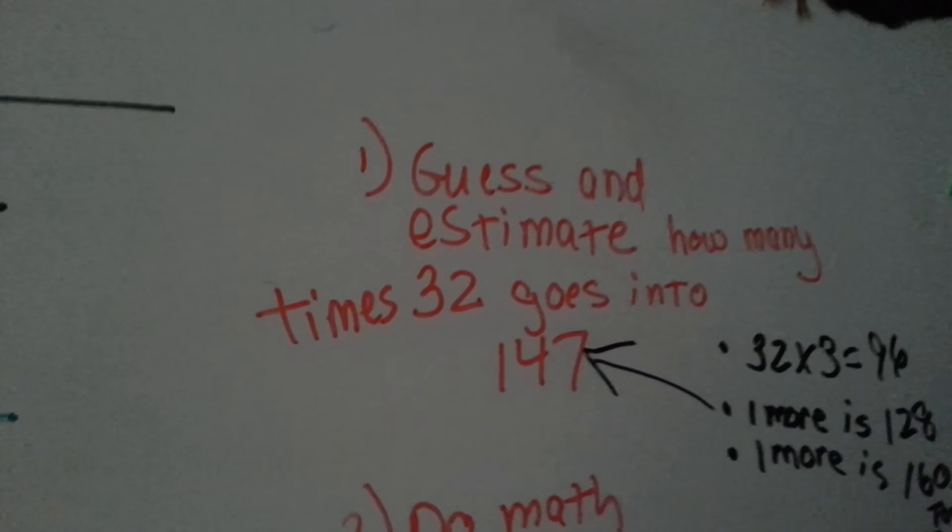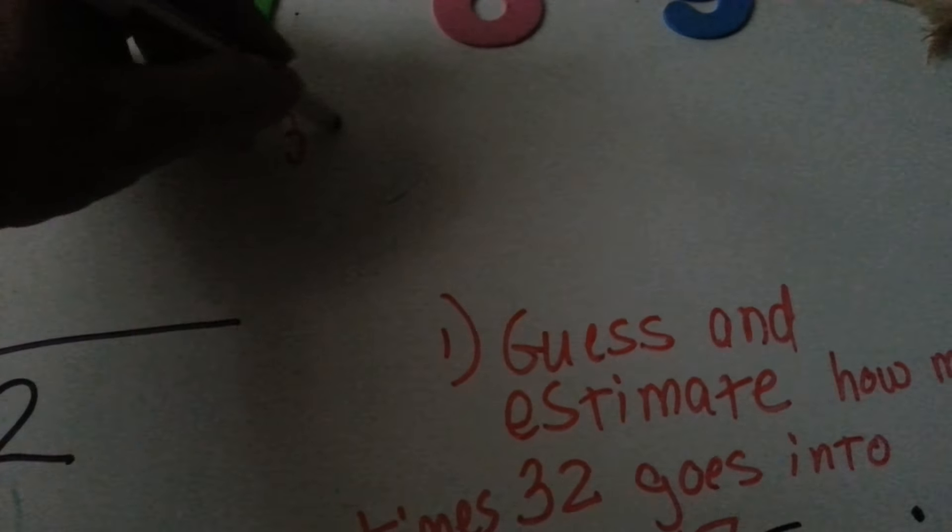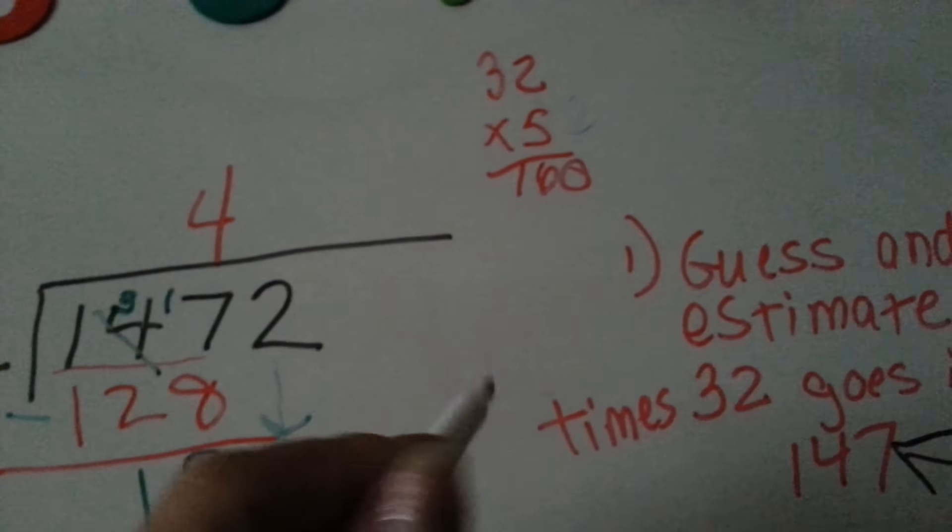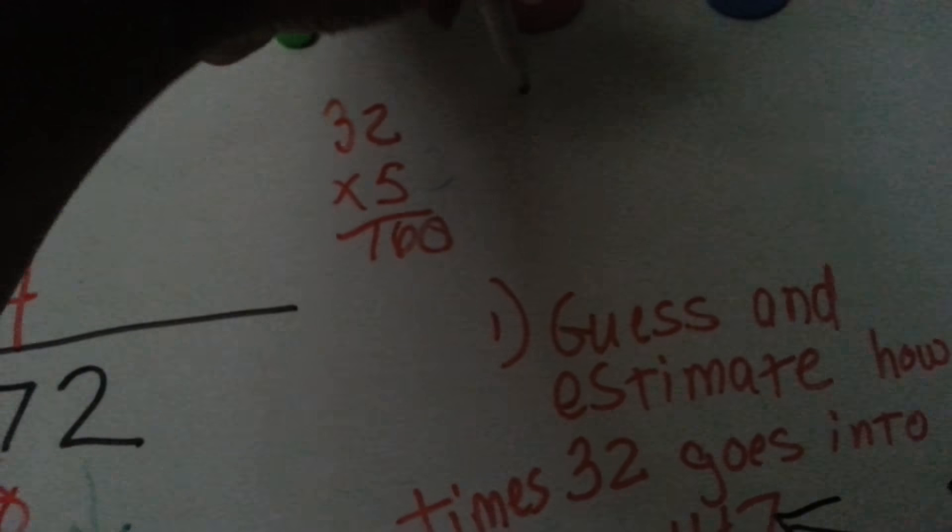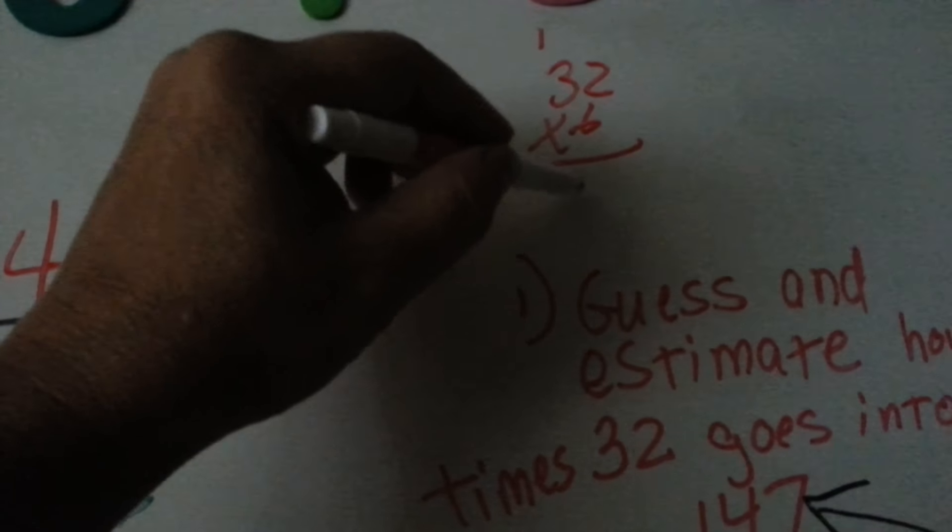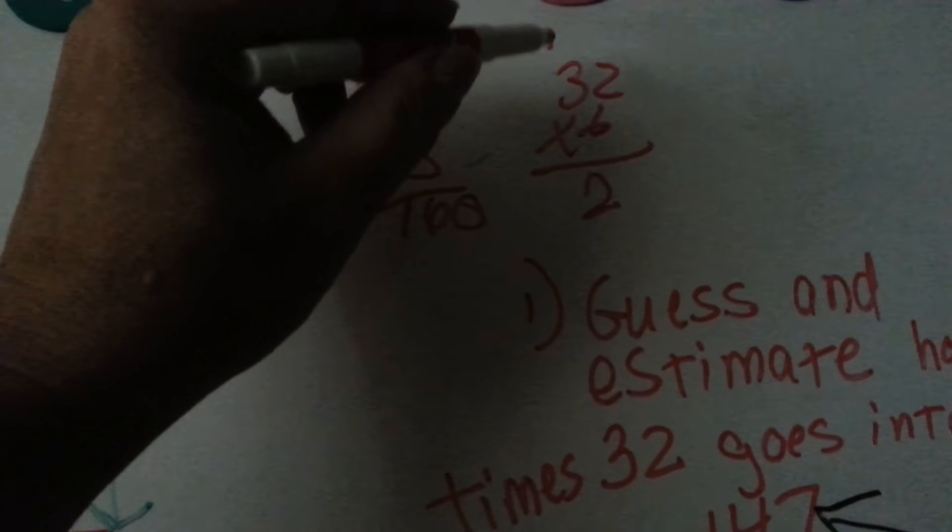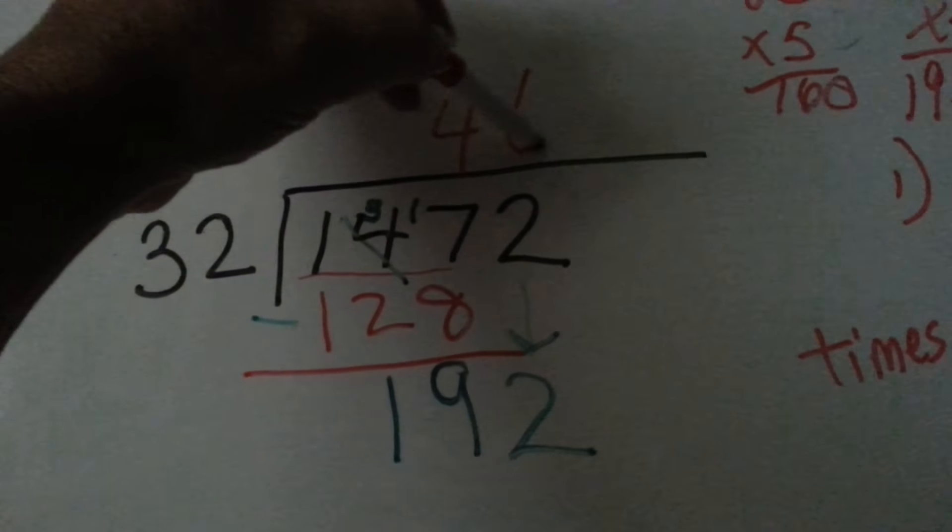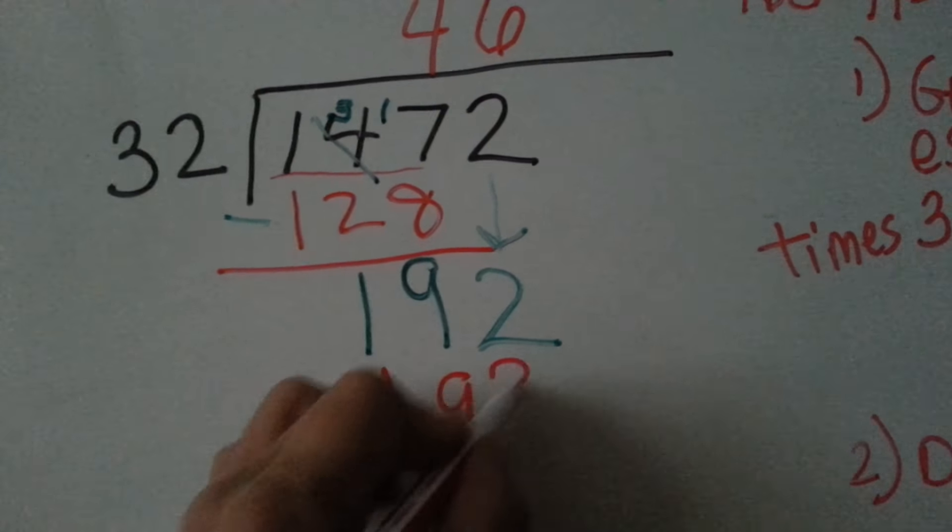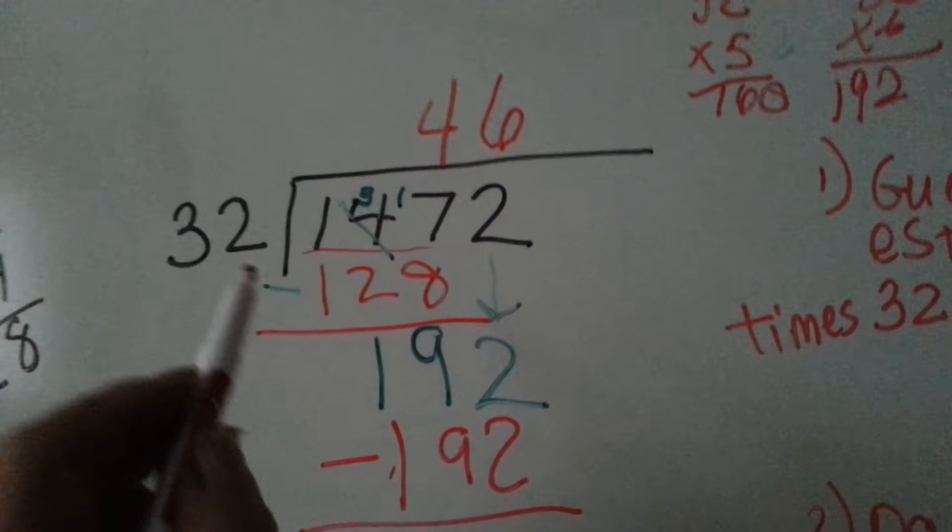From doing our math before, we know that 32 times 5 was 160. Can we get another 32 in there to make it 32 times 6? 6 times 2 is 12, carry the 1, put the 2 down. 3 times 6 is 18, and one more is 19. So 6 fits perfectly. The 6 would go up here, and 32 times 6 is 192.